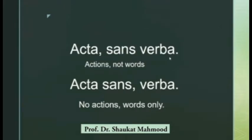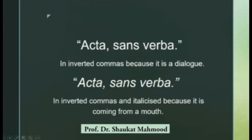But if we place the comma after 'sans,' then the meaning becomes absolutely different — the opposite meaning. Now 'acta sans' means no action, only the talking, like our leaders do — action is not only the talking. In the first example, this is what Julius Caesar says. In the second case, it is what leaders say. Once again, the comma is the magic thing in this sentence. Since 'acta sans verba' is a dialogue from Julius Caesar, we have to put it in inverted commas, italicize it, and put inverted commas on both sides. That is how we treat dialogue in our thesis.